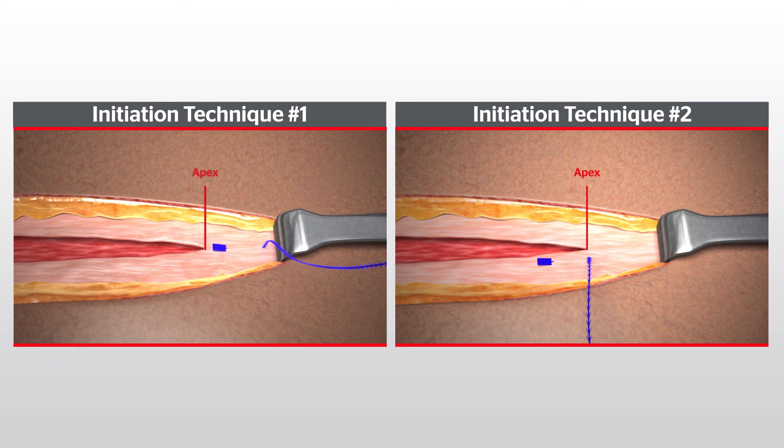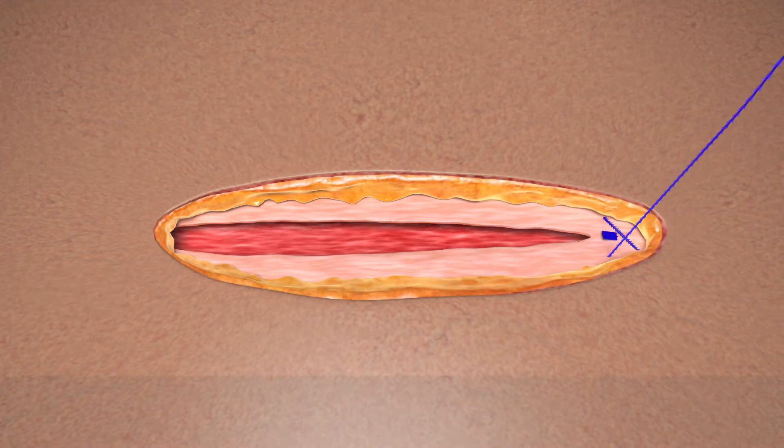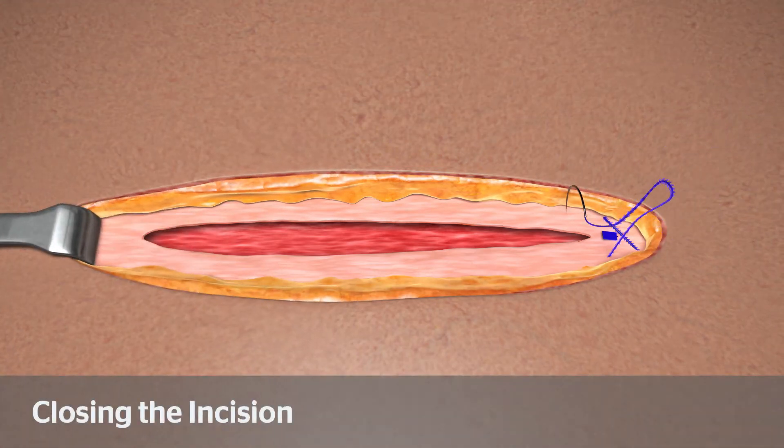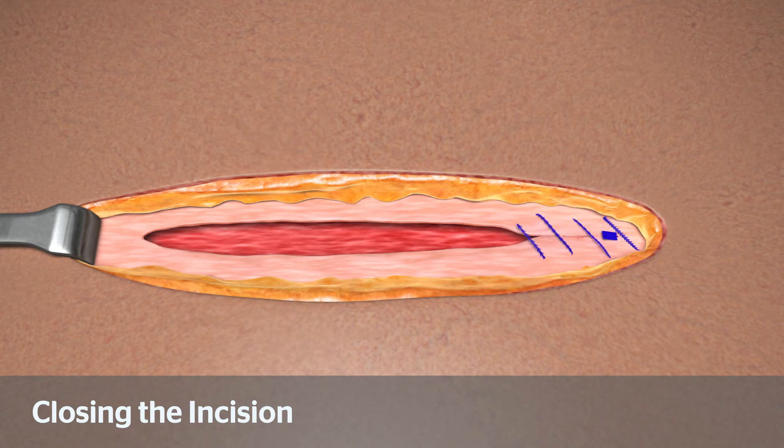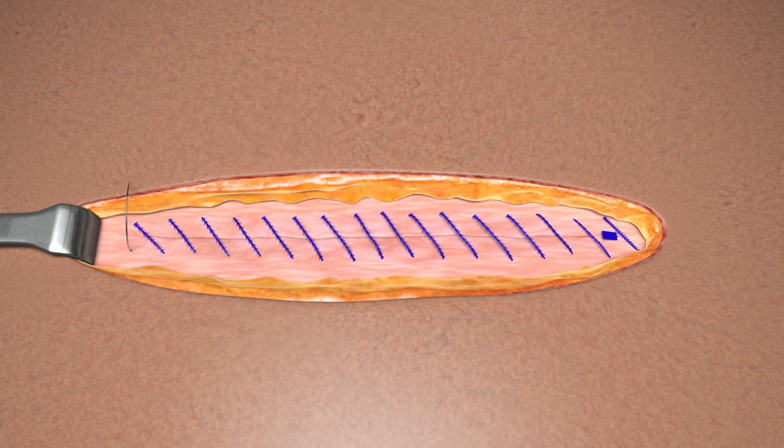Regardless of the initiation technique used the remaining closure steps are the same for both. Proceed with a continuous suturing pattern to close the incision taking opposing bites on either side of the wound in standard fashion. To achieve the desired approximation and tension gently pull on the device with each tissue passage. Continue approximating along the length of the incision taking care not to over tighten the device.